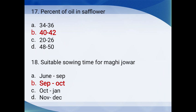Percent of oil in safflower (kusuma): 34-36%, 42-42%, 20-26%, or 48-50%? The answer is 42% oil is present in safflower. Sowing time for Rabi jowar: June to September, September to October, October to January, or November to December? The answer is September to October.